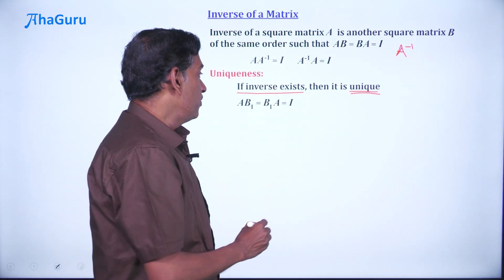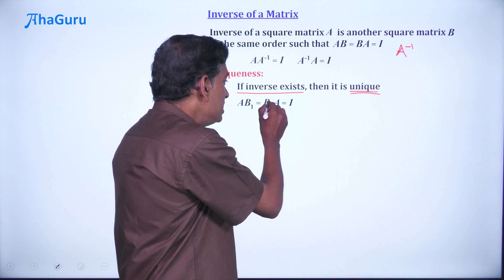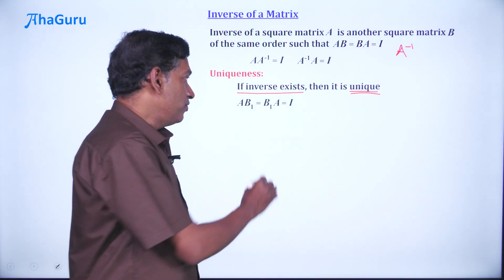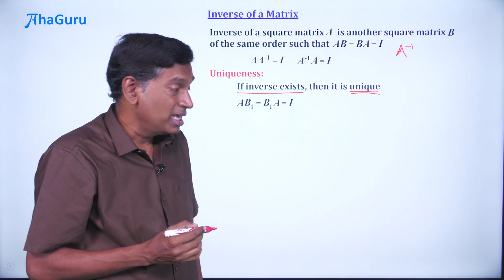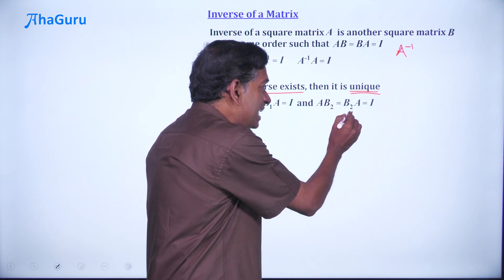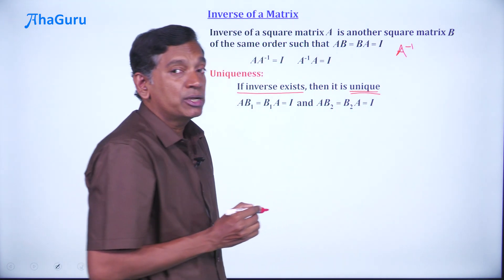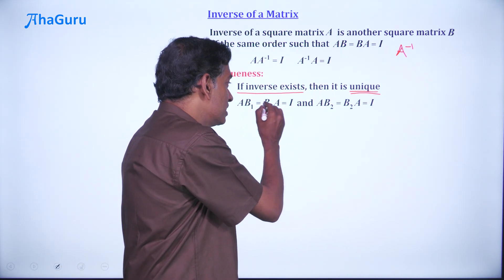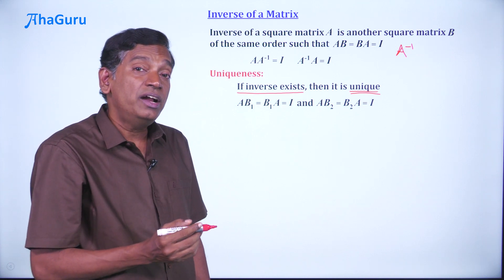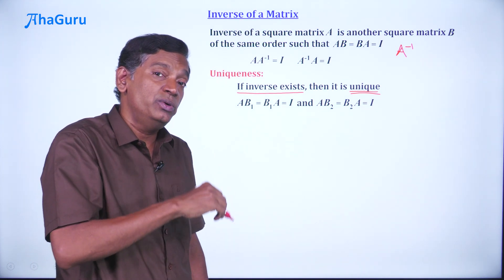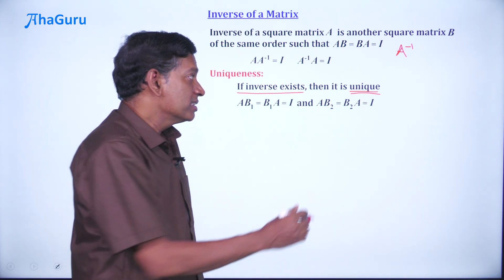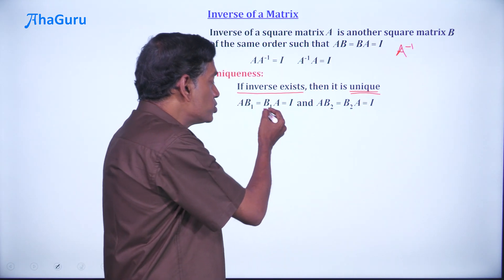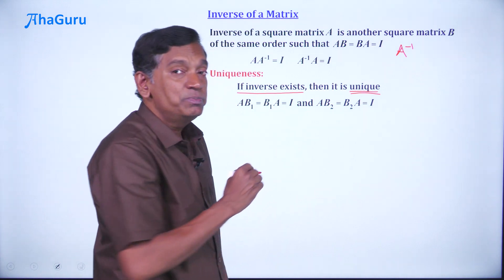What this means is: if AB1 equals B1A equals I, that means we found a B1 which is like an inverse; and if AB2 equals B2A equals I, this statement says that such a thing is not possible — you cannot find two different matrices B1 and B2 that satisfy this property. We can show that B1 and B2 must be the same.